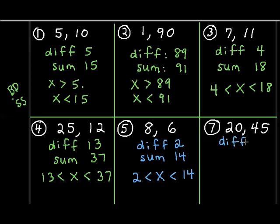And 20 and 45. Their difference? Let's see. 45 minus 20 is 25. And their sum, if I add them together, I get 65. So, I'm looking for a number that's between a little smaller number, 25 and 65. Once you get a little more practice, it's a little easier.